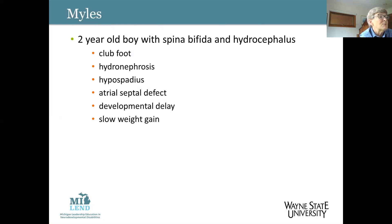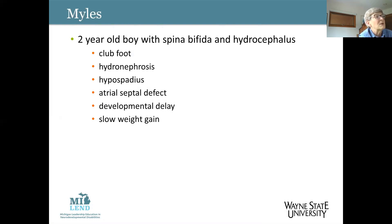Miles also has hypospadias — a problem where the urethra is on the end of the penis — as well as an atrial septal defect, which is a birth defect of the heart, developmental delay, and he's gaining weight slowly. Let's start putting together a care map for Miles.